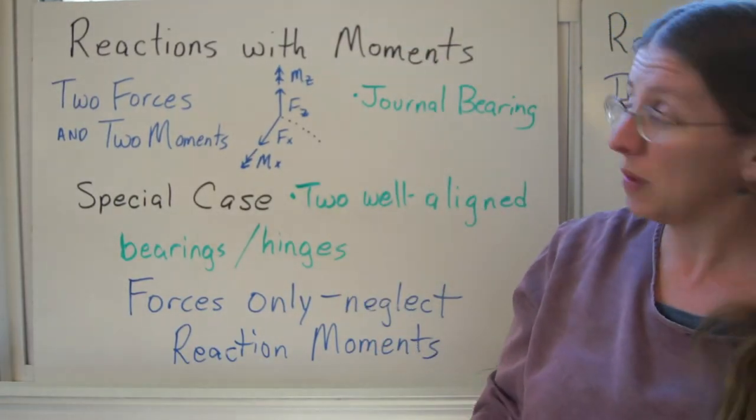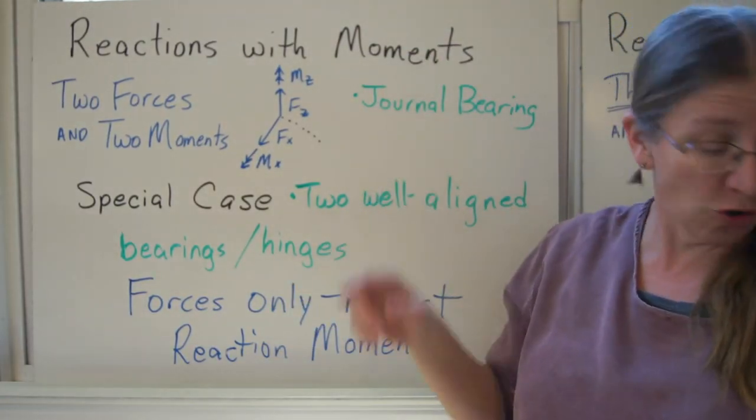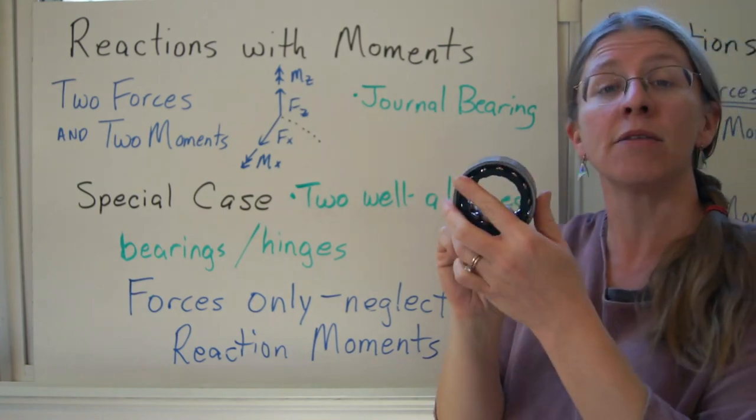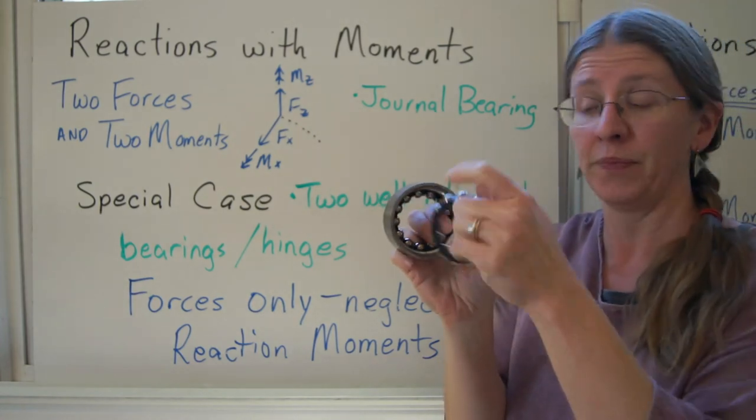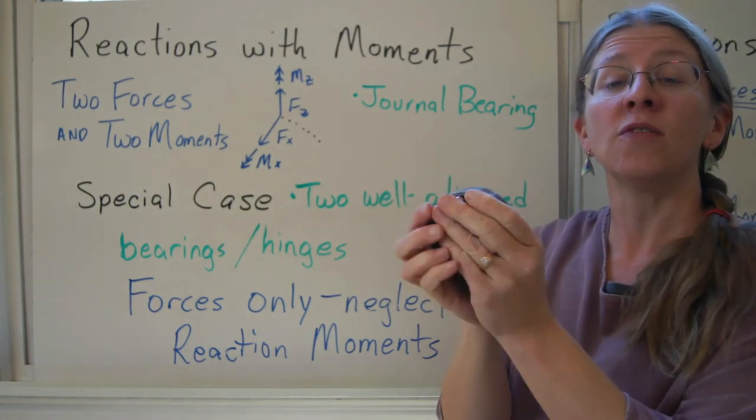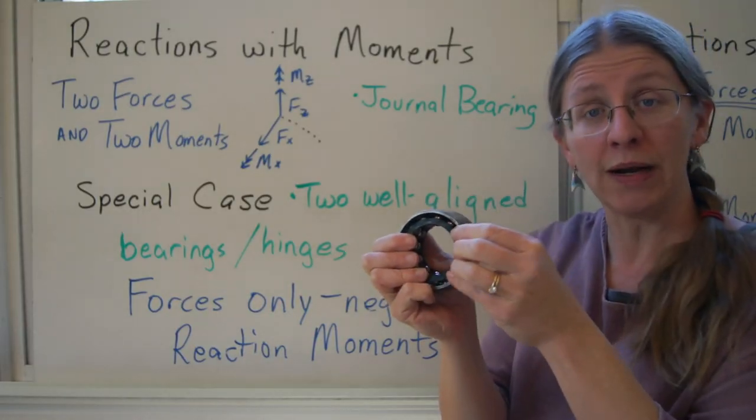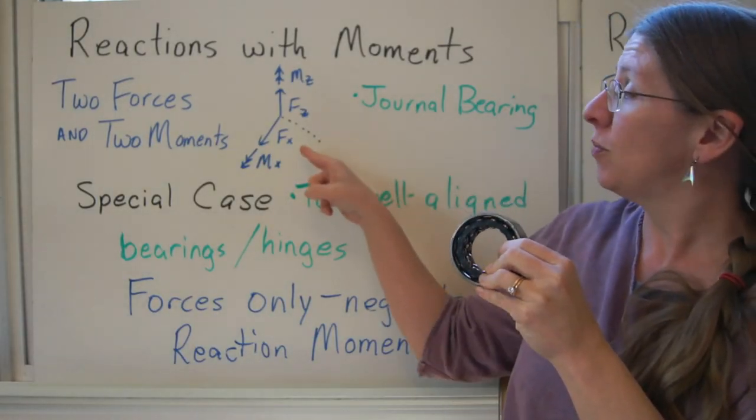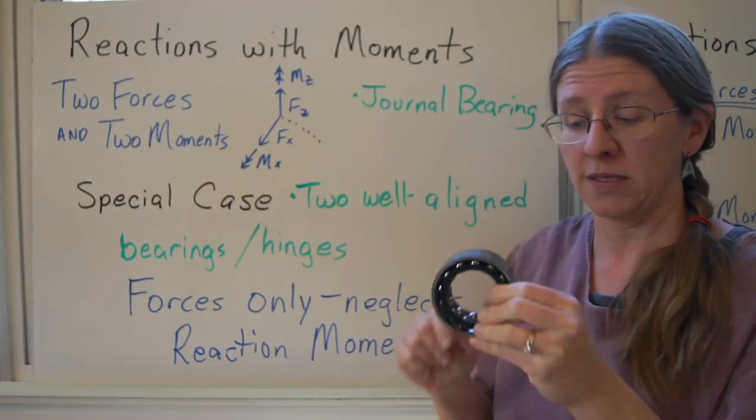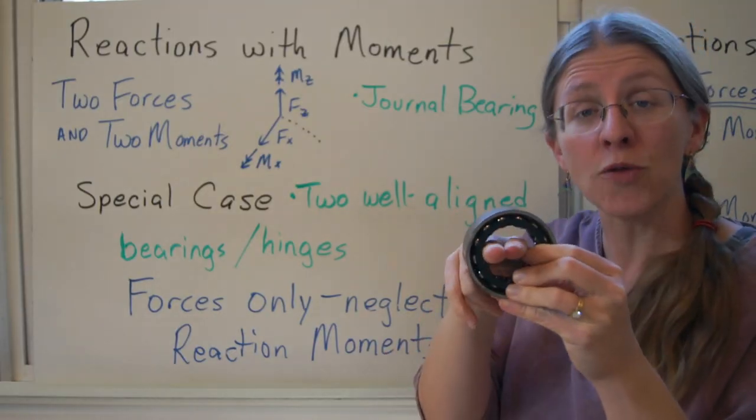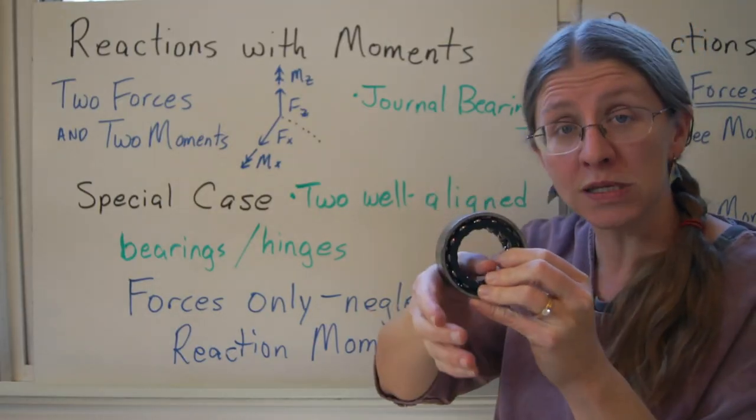The last two cases we want to talk about are the journal bearing. That would be this kind of thing without that lip inside. A journal bearing is often used in conjunction with the thrust bearing. When you have a journal bearing, you have two forces in two moments. This now will allow the rod to pass through and twist along its axis, but nothing else.